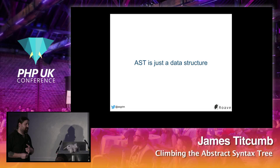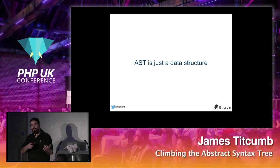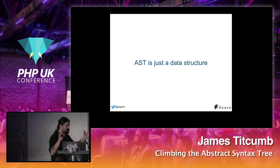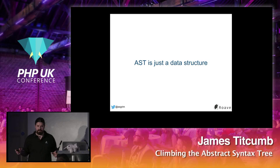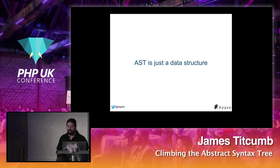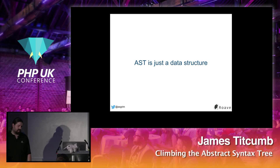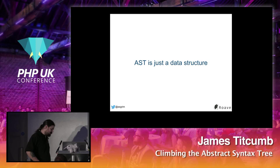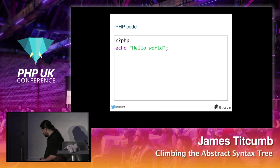The AST can be modified in theory, and if you modify the tree it would modify the behavior of the code — you're changing the code programmatically. It can contain metadata like line numbers and file names. The data structure can also be unparsed — regenerated back into source code, though the layout may change since spacing may be ignored.